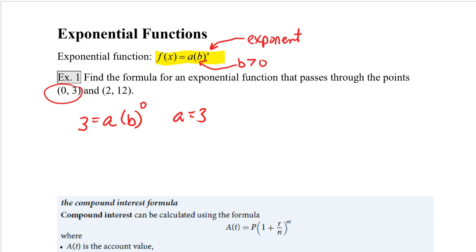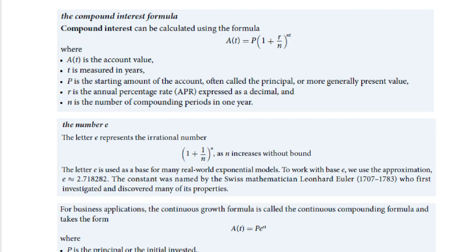Now I'll substitute in 12 for f(x), 3 for my a, I'll leave b in for my base, and I will raise this to the x or to 2. When I divide both sides by 3, I get 4 is equal to b squared, which means b is equal to plus or minus 2. But for us, our base needs to be positive, so b is equal to 2. So our equation is going to be f(x) equals 3 times 2 to the x.